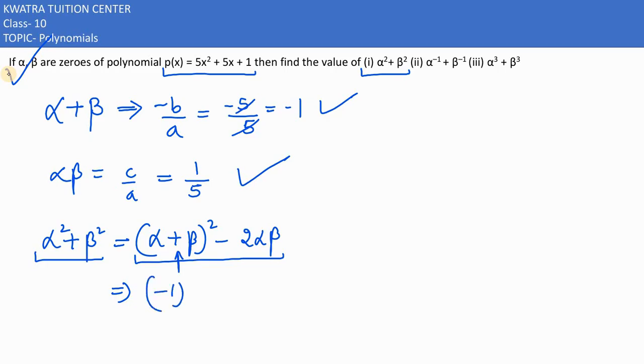Alpha plus beta is negative 1, and alpha dot beta ki jaga 1 by 5. So I would have 1 minus 2 by 5. This would give you 3 by 5.